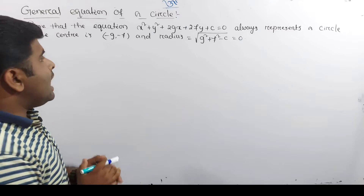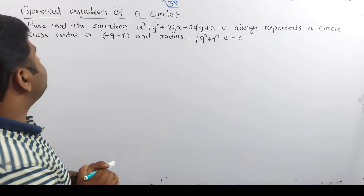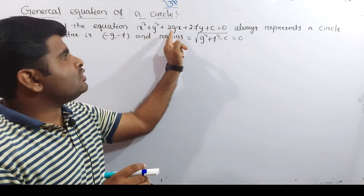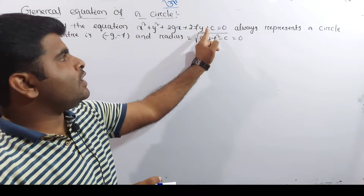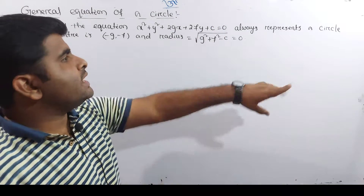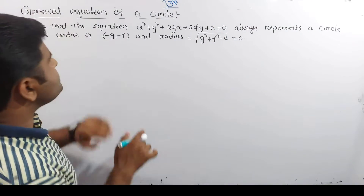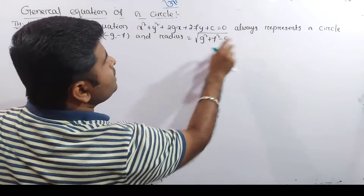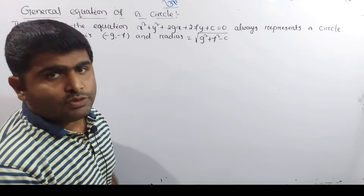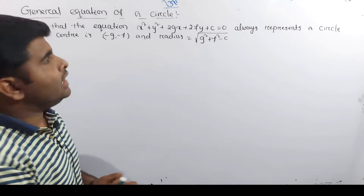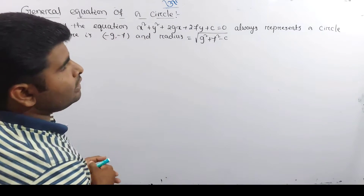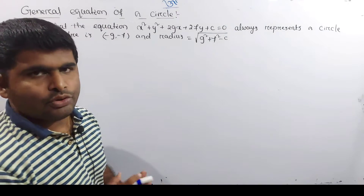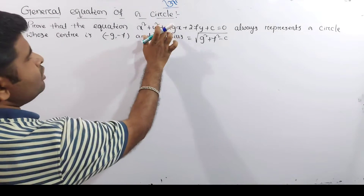Let's look at the equation of a theorem. We need to look at the theorem whose center is minus g, minus f, and radius. This is the root of g squared plus f squared minus c. This is the statement. We need to look at the equation of a circle — this is the center and the radius.